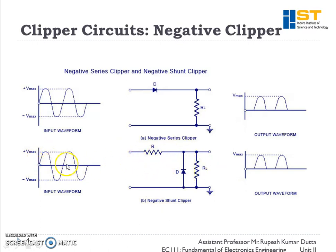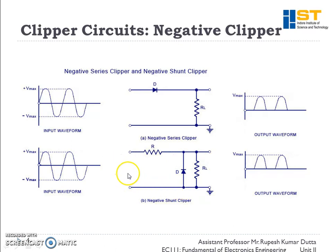In the negative shunt clipper, when a positive voltage is applied the diode becomes reverse biased — positive voltage is applied to the negative end of the diode — so it is open and all positive waves pass to the load. In the negative half cycle, the diode becomes forward biased and shorts, so no signal reaches the load. No negative peaks appear in the output.